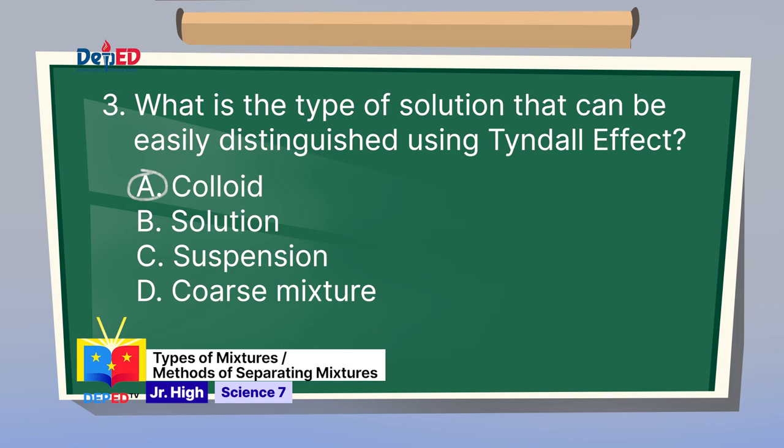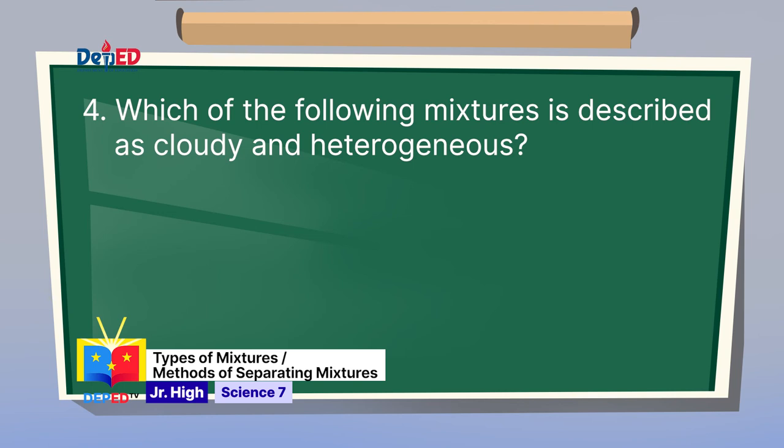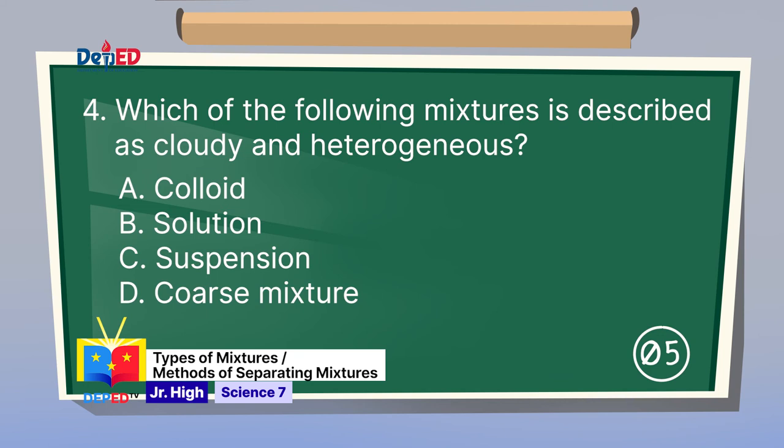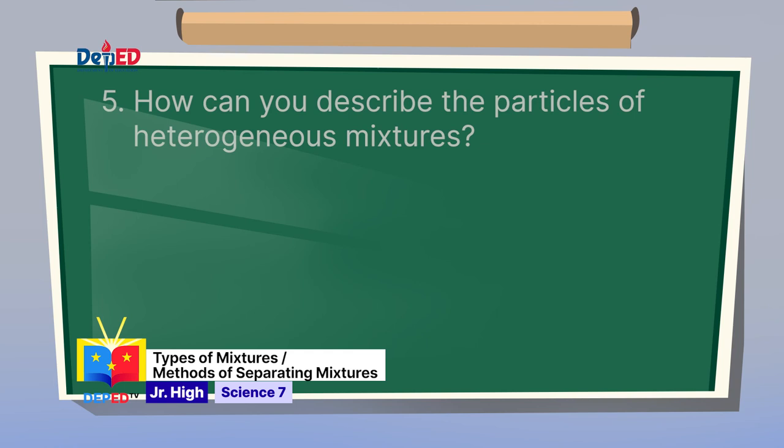Number 4: Which of the following mixtures is described as cloudy and heterogeneous? A. Colloid. B. Solution. C. Suspension. D. Coarse mixture. Among the types of mixtures, suspension is known as cloudy and heterogeneous. The correct answer is letter C.